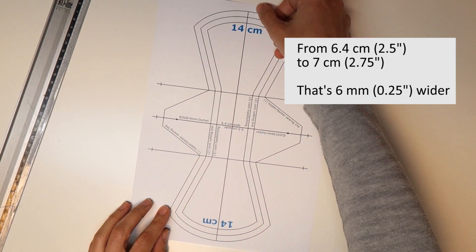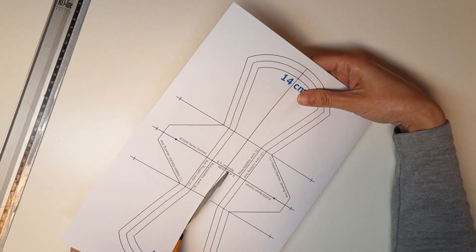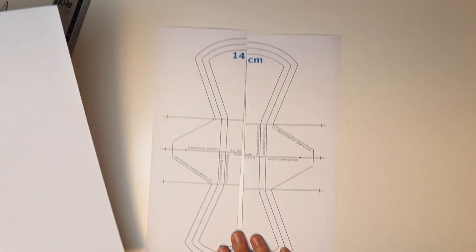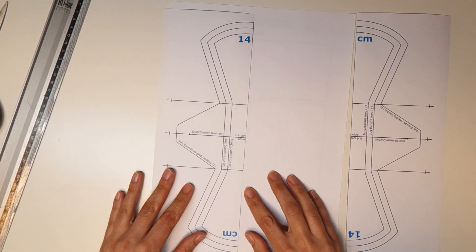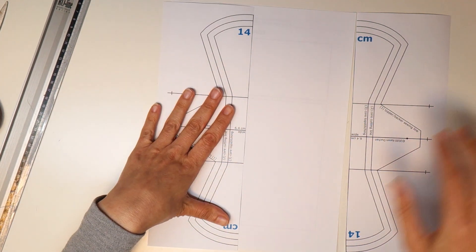So the first thing you want to do is cut along this center line. We're going to take a piece of scrap paper and put it underneath. And we can tape this or glue this down onto the paper.